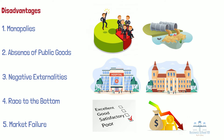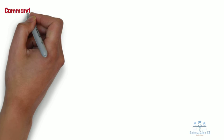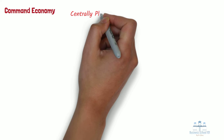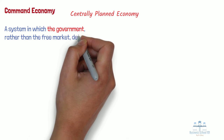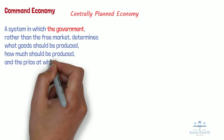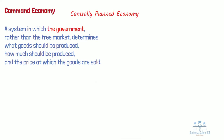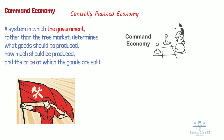Now let's learn about the opposite: the command economy. A command economy, also known as a centrally planned economy, is the system in which the government — rather than the free market — determines what goods should be produced, how much should be produced, and the price at which the goods are sold. It also determines investments and incomes. The command economy is a key feature of any communist society. Cuba, North Korea, and the former Soviet Union are examples of countries that have command economies.